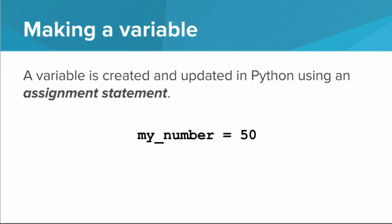You can create a new variable or update an existing variable in Python using what's called an assignment statement. This statement has three parts. On the left, you have the name of the variable, on the right you have the value that you want to give to that variable, and in the middle you just have a single equals sign.